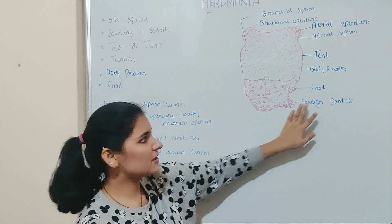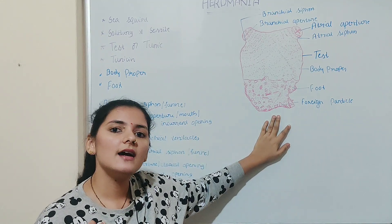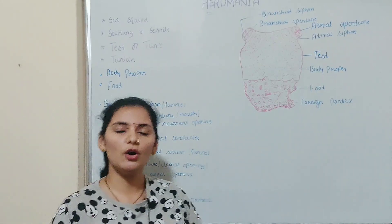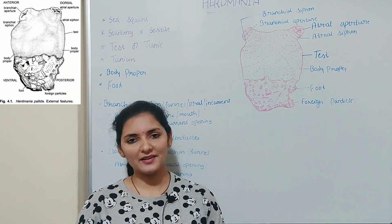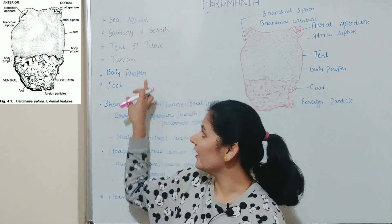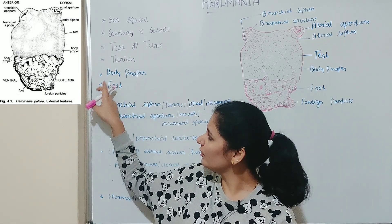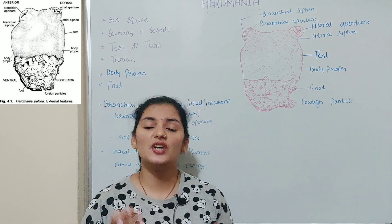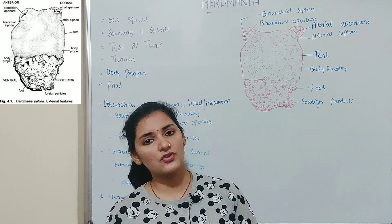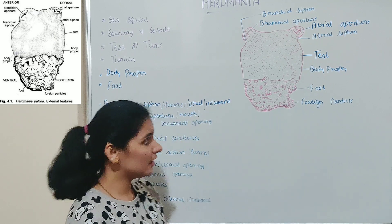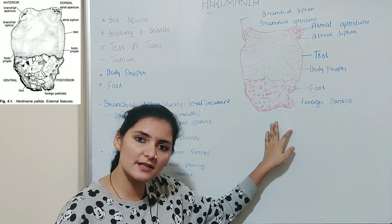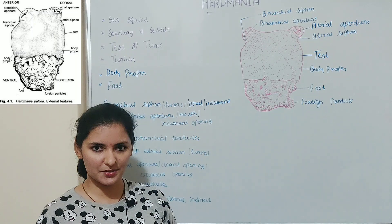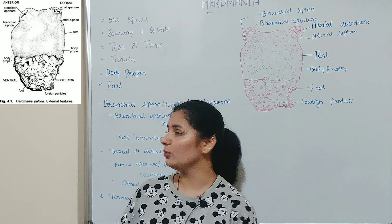The main function of the test or tunic layer is that it acts as an accessory respiratory organ and a receptor organ for the body of Herdmania. The body of Herdmania is divided into mainly two parts: body proper and foot. The foot or basal part is absent in organisms attached to hard substratum like rocks or molluscan shells, but is present in those attached to the sandy bed.